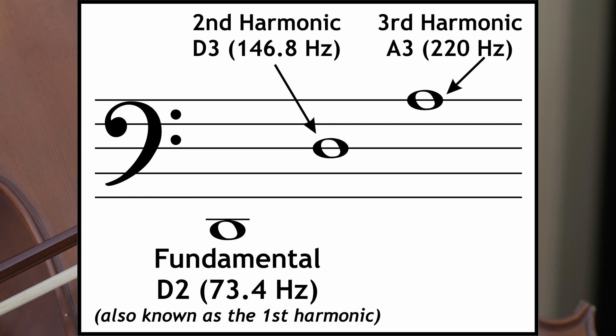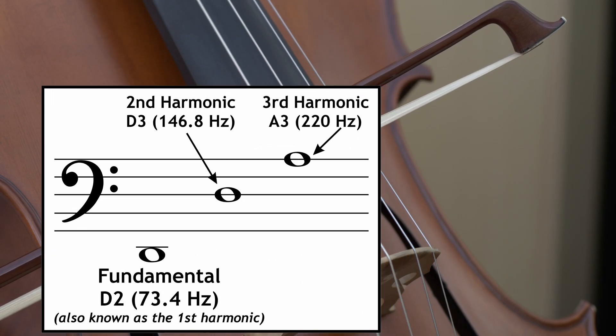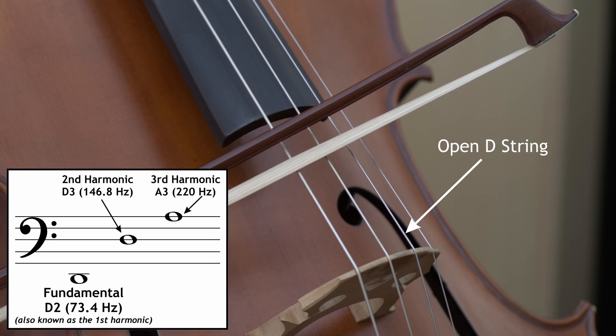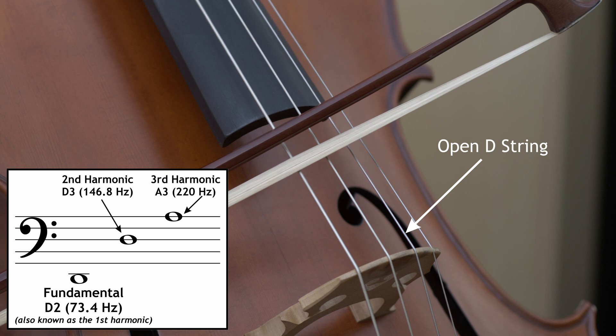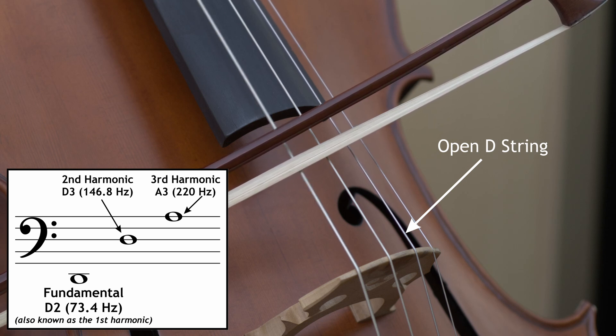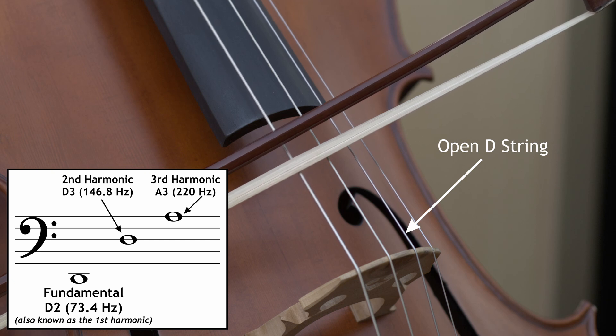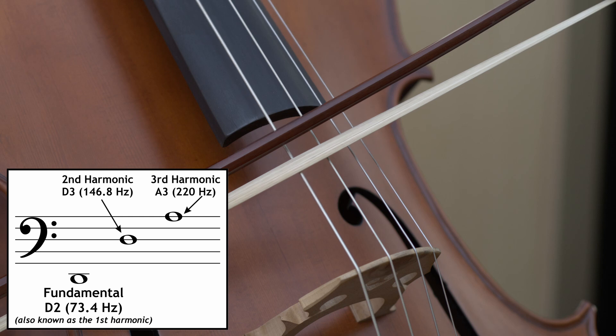The pitch you are hearing is D2, or low D on the cello, and its frequency is 73.4 Hz. Its next harmonic should match, that is if you've tuned your instrument correctly, to the open non-bowed D string. This D string, known as D3, has a frequency of 146.8, which is double the lower D, so it will naturally respond.